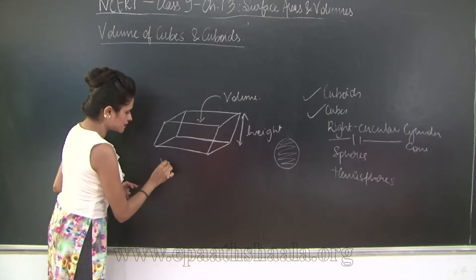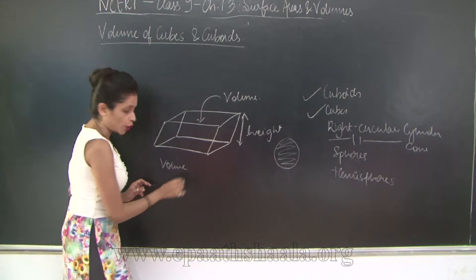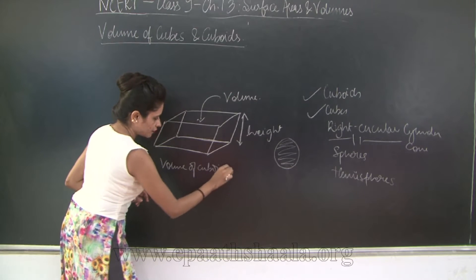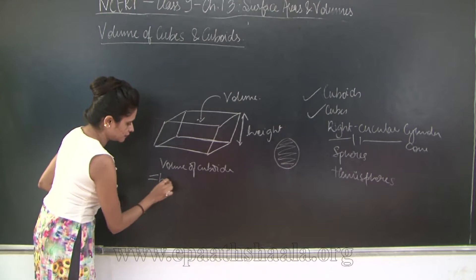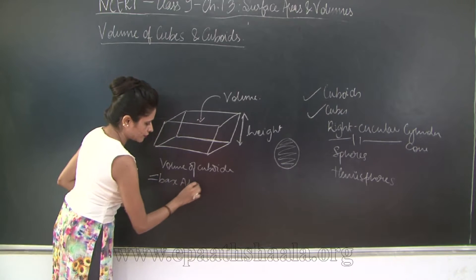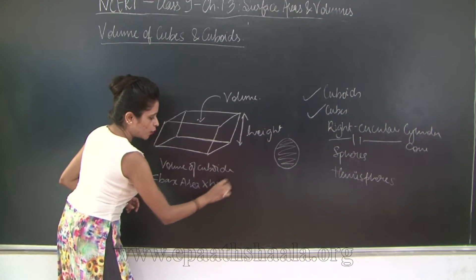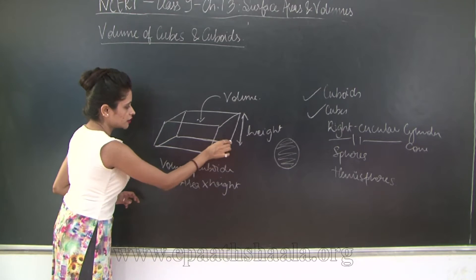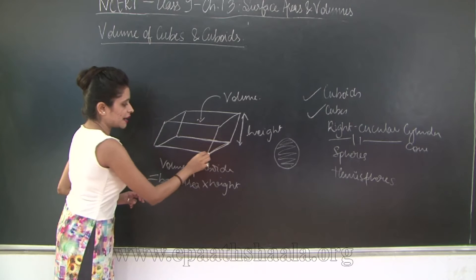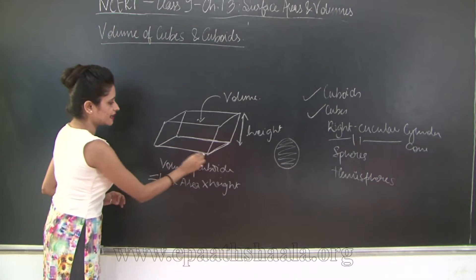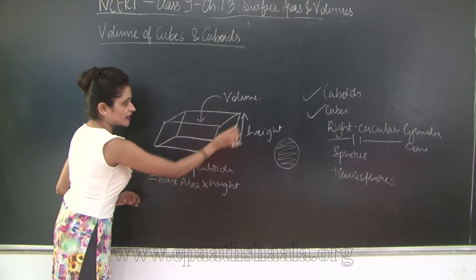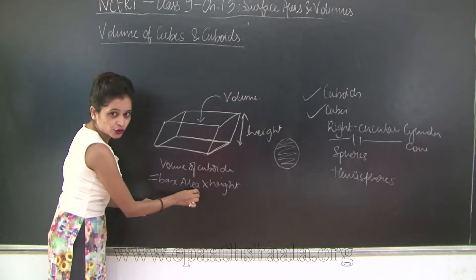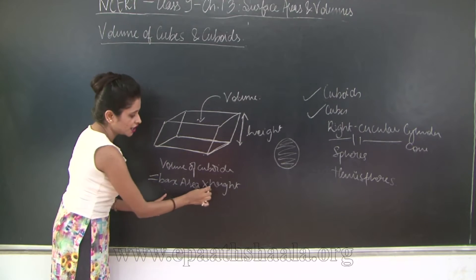So what can we say the volume of a cuboid is going to be base area into height. Why am I saying base area into height? Because this portion out here, this dimension is going to be constant, that is length into breadth. As and when the height keeps increasing the volume will increase. So base area is going to remain constant, therefore base area into height.